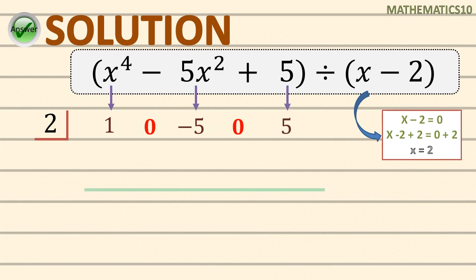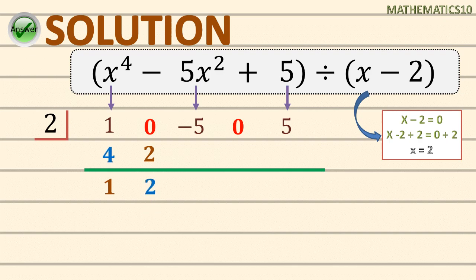Now it's complete, so we can proceed with synthetic division. Bring down the leading coefficient, which is 1. Multiply by 2: we get 2. Combine 0 plus 2: we have 2. Multiply 2 times 2: we get 4. Combine negative 5 and 4: we have negative 1. Multiply negative 1 and 2: we get negative 2. Combine 0 plus negative 2: we have negative 2. And lastly, negative 2 times 2 gives negative 4.